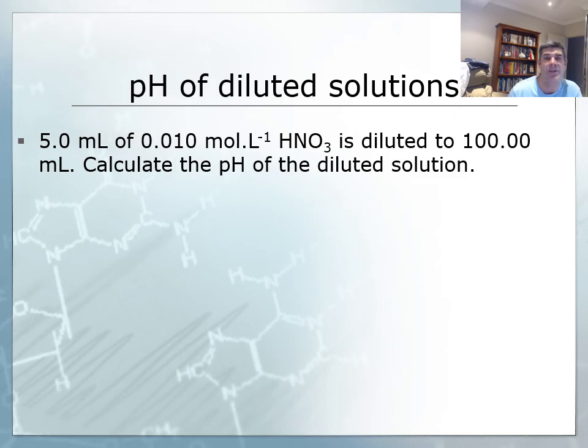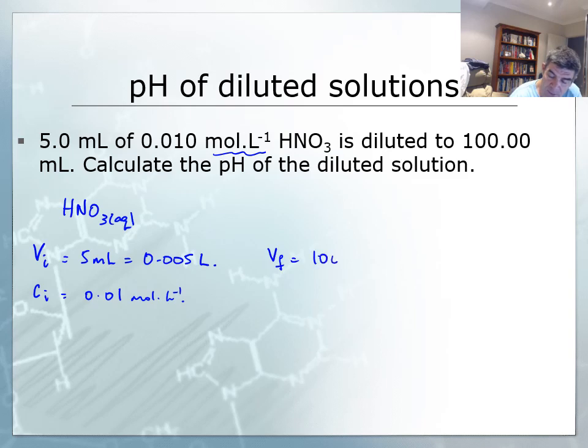The first thing that we want to do is look at what happens to the pH of a solution after it's been diluted. Here we have 5.0 mL of 0.010 mol/L HNO3 diluted to 100.00 mL. I'm going to convert that to 0.005 litres initially and 0.1 litres finally, because if I'm looking at concentrations in moles per litre, I need consistency. I need to calculate the pH of the diluted solution.